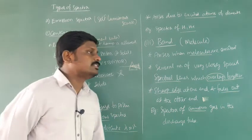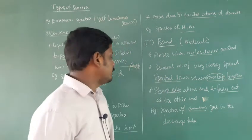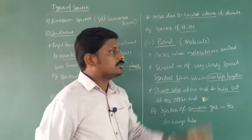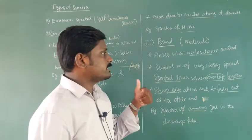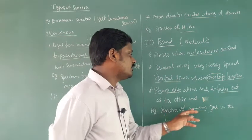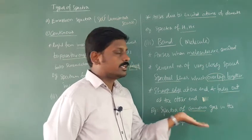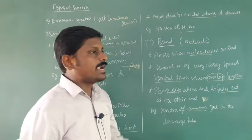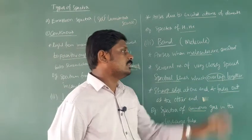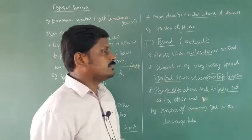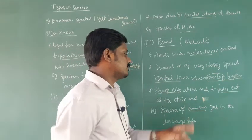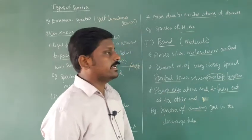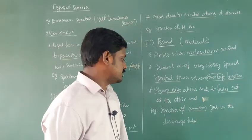Third, band emission spectra. It arises when molecules are excited — unlike line emission spectra which arises due to excited atoms. Consider the spectra of ammonia gas in a discharge tube; ammonia is a combination of nitrogen and hydrogen. We will get band emission spectra, which consists of several very closely spaced spectral lines that overlap together, with sharp edges at one end and fading out at the other end.